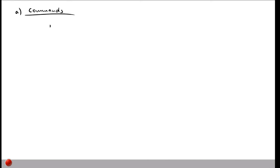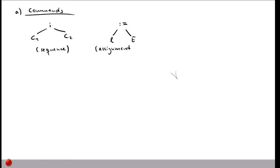One kind of command consists of two other commands chained together — this is called a sequence. You take a command c1, put a semicolon in between, and then have another command c2. Another kind of command is an assignment, where we have some location l into which we are assigning the value of some integer expression e — so it's an assignment of an expression e to some label or location l.